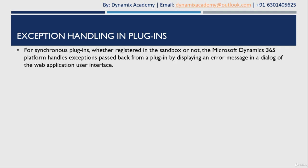For synchronous plugins, whether they are registered in sandbox or not, the Dynamics 365 platform handles exceptions passed back from the plugin by displaying an error message in a dialog of the web application user interface. So for synchronous plugins, whenever there is an exception raised, you will see a dialog box appearing on the web application displaying that error message with detail, and you can even download the log file for that.